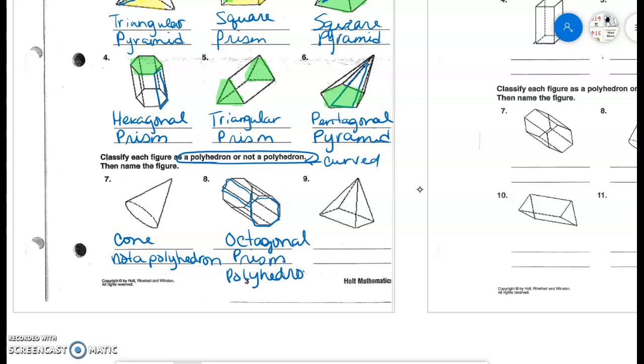Poly meaning many sides. And then here, again, we have a pyramid. We can call this a square pyramid. So this is also a polyhedron.